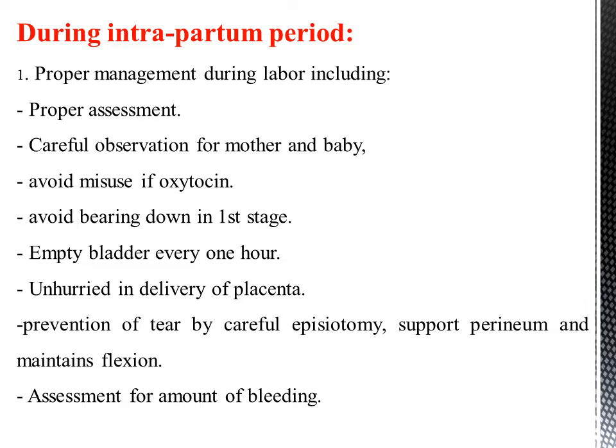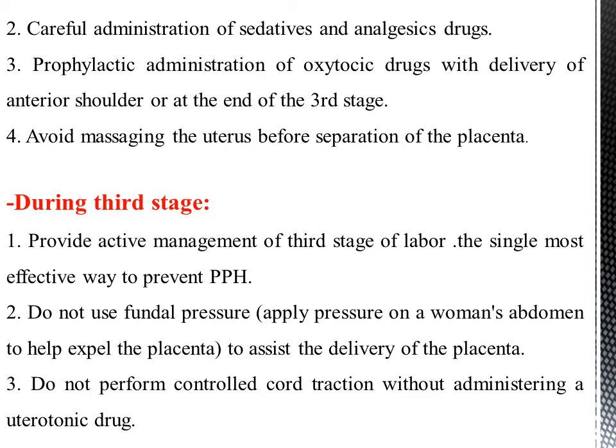During the intrapartum period, proper management during labor includes: proper assessment and careful observation of mother and baby; avoid misuse of oxytocin; avoid bearing down in the first stage; empty bladder every one hour; unhurried delivery of the placenta; prevention of tears by careful episiotomy; support perineum and maintain flexion; assessment of the amount of bleeding; careful administration of sedative and analgesic drugs; prophylactic administration of oxytocin with delivery of the anterior shoulder or at the end of the third stage; avoid massaging the uterus before separation of the placenta; provide active management of the third stage of labor — the single most effective way to prevent postpartum hemorrhage; do not use fundal pressure; do not perform controlled cord traction without administering the uterotonic drug.